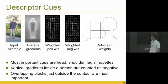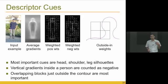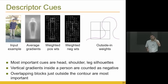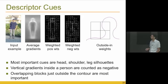Another finding: the blocks just outside the person's silhouette have the highest weights. This means it's not what's inside the person that matters most, but the context around them. This contextual information is crucial for people detection, and subsequent work has built on this insight even further.